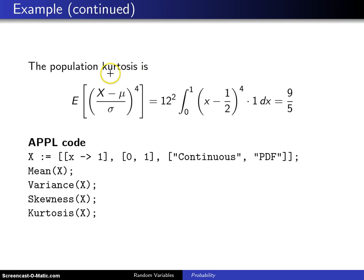Moving on to the kurtosis, the population kurtosis is the expected value of (x - μ) divided by σ raised to the 4th power. Now this σ raised to the 4th power can come out as a constant, and you remember that σ is 1 over the square root of 12, so that means 12² or 144 will be out front multiplied by the integral from 0 to 1. That is over the support of the random variable X of (x - μ), (x - 1/2) raised to the 4th power multiplied by the probability density function dx.